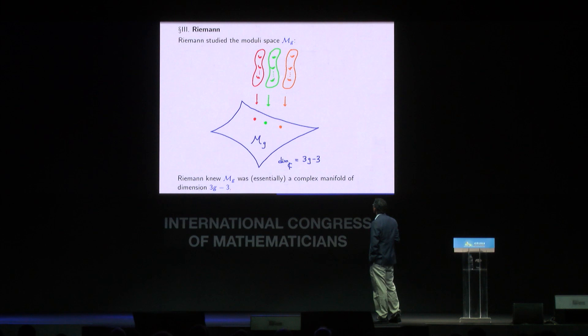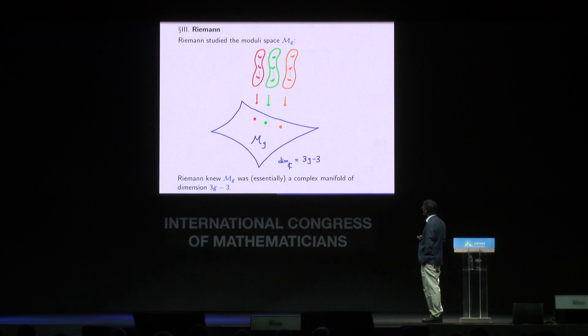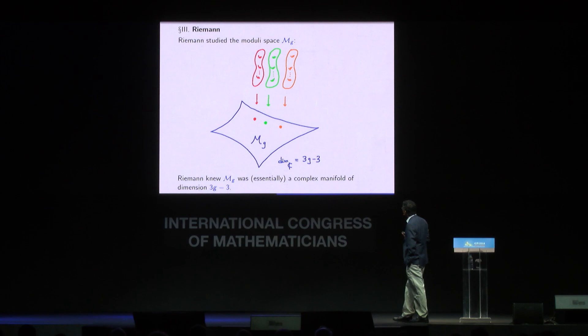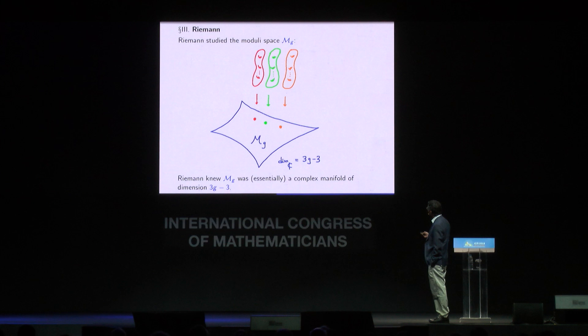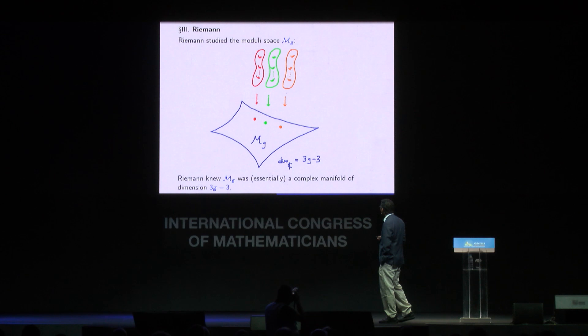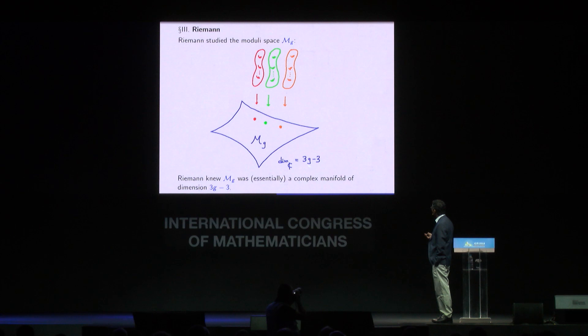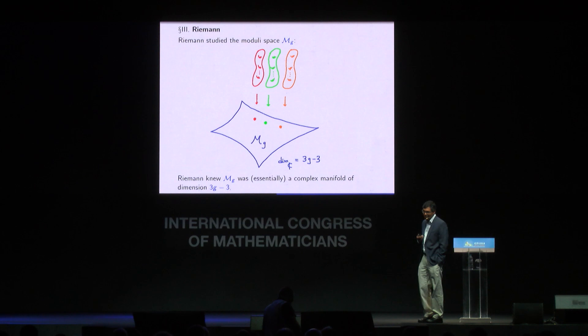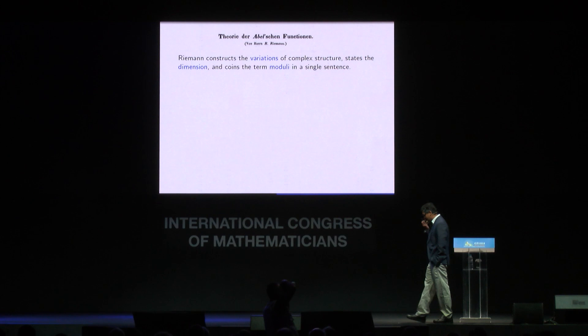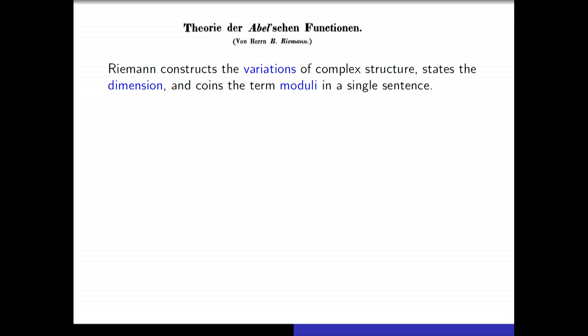Riemann studied the moduli space and knew it was essentially a complex manifold of dimension 3g−3. Every point on the moduli space corresponds to a complex structure on a genus g curve. For g=0 one gets −3, which is problematic, and genus 1 is also special due to automorphisms; but for genus 2 and higher the formula is exactly correct. We know Riemann knew this because in his 1857 paper 'Theory of Abelian Functions,' he constructs the variations of complex structure, states the dimension formula, and coins the term 'moduli' — all in a single sentence.